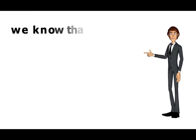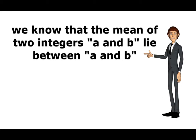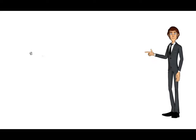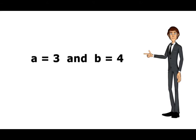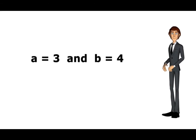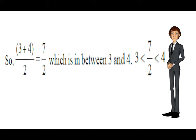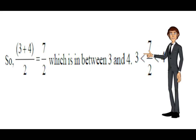We know that the mean of two integers A and B lies between A and B. Here, A equals 3 and B equals 4. So the average of 3 and 4 is 7 by 2, which lies between 3 and 4.